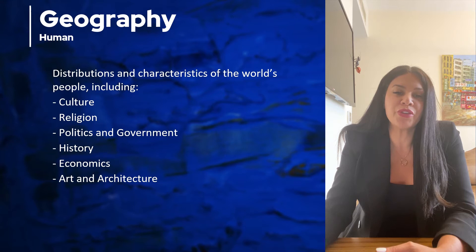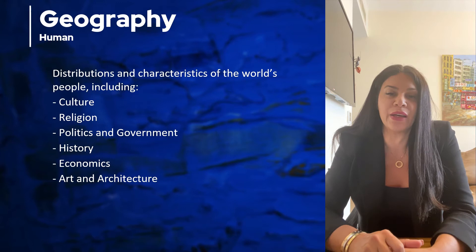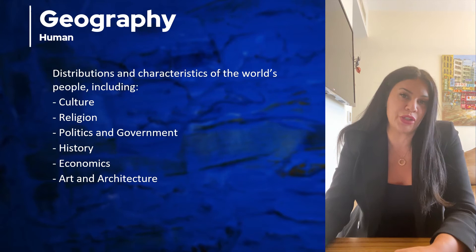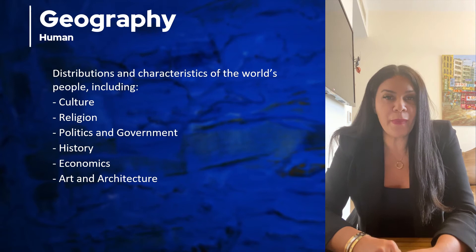Moving on to the next branch of geography: human geography. Human geography looks at the human characteristics of the earth's people. Human characteristics include culture, religion, government, economics, and much more. Human characteristics define everything mankind is and what mankind does.